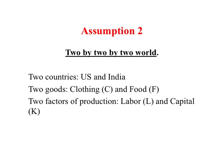The second assumption we make is we are looking at a two-by-two-by-two world. In other words, there are two countries — let's call them the U.S. and India, where the U.S. is the home country and India is the foreign country. Each of these two countries produces and consumes two goods: clothing, denoted by the letter C, and food, denoted by letter F. So two countries and two goods.